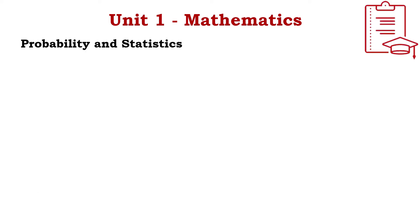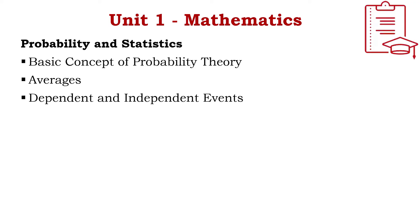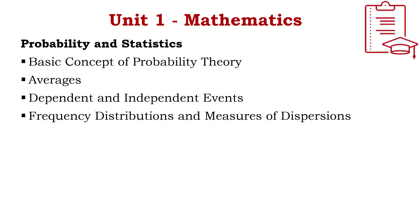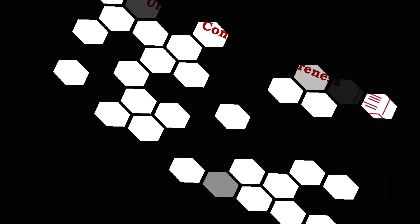The fifth and last subunit of Unit 1 is Probability and Statistics, covering basic concepts of probability theory, averages, dependent and independent events, frequency distributions and measures of dispersion, skewness and kurtosis, correlation and regression, and random variables. These are all the topics covered in Unit 1.